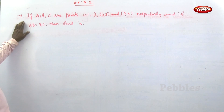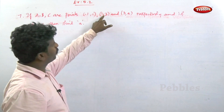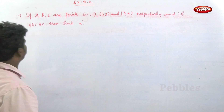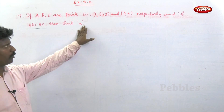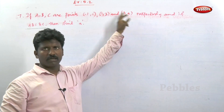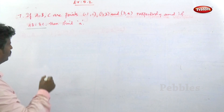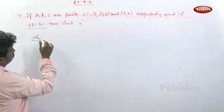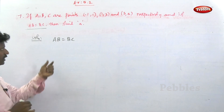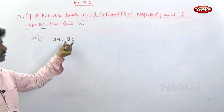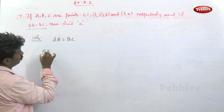See the next problem. If A, B, C are points — A point, B point, C point respectively — and AB is equal to BC, then find the value of 'a'. So, what is the given condition? AB is equal to BC. We need to find the 'a' value from this condition.